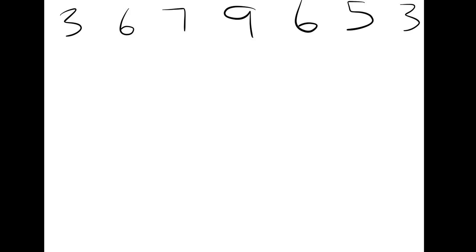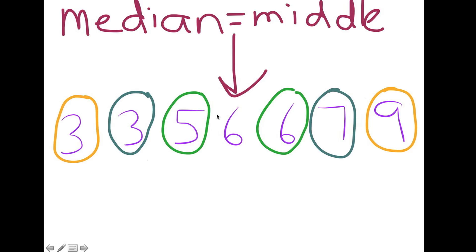To calculate the median of a group of numbers, you will need to start by arranging them from smallest to largest. When I've arranged them from smallest to largest, the median is simply the middle number.